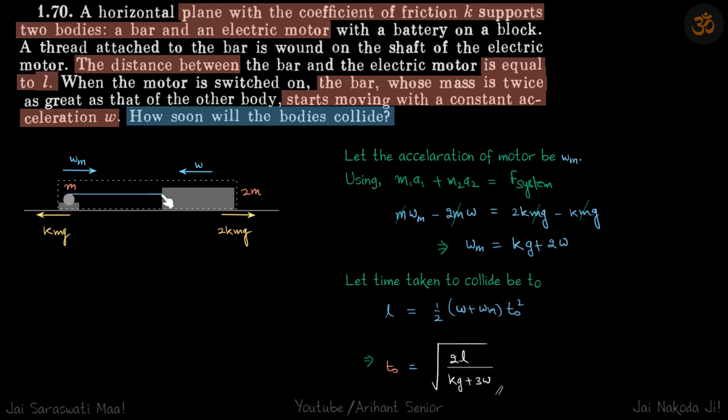We have a motor that is connected to a bar with a thread. So when the motor starts to wind this wire, the motor will come towards right, and of course the bar will shift towards left.